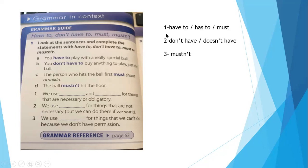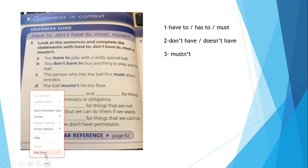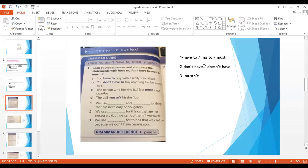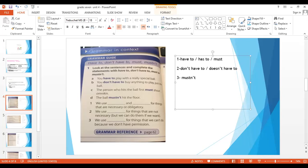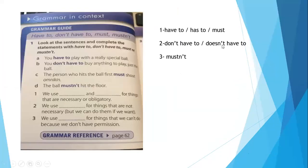We use 'don't have to' or 'doesn't have to' for things that are not necessary. Remember: 'doesn't' for singular and 'don't' for plural. So we use 'don't have to' or 'doesn't have to' for something that is not necessary, but we can do it if we want.